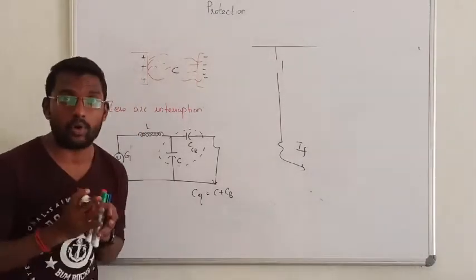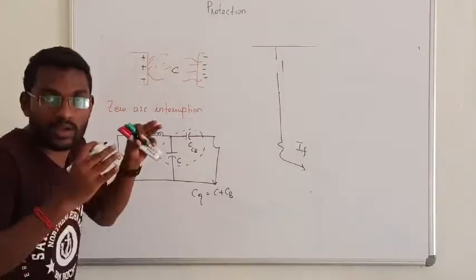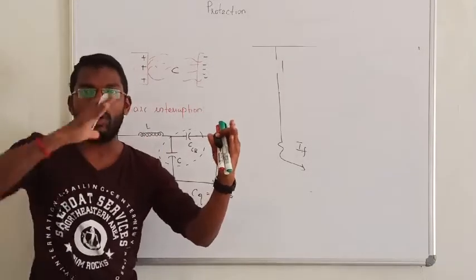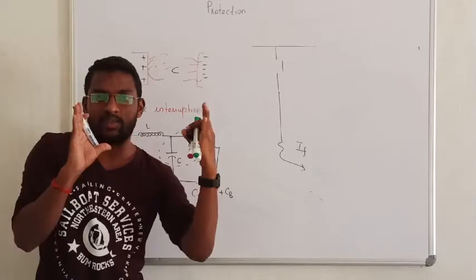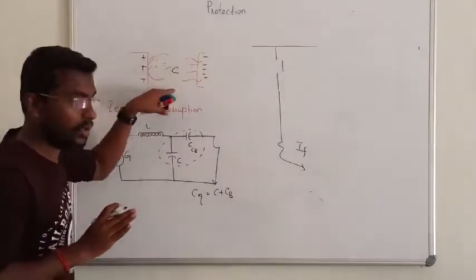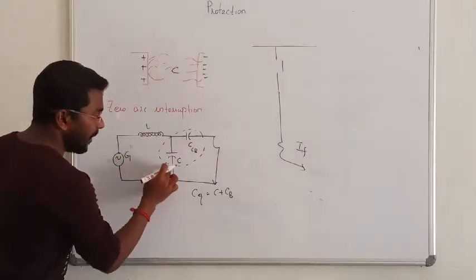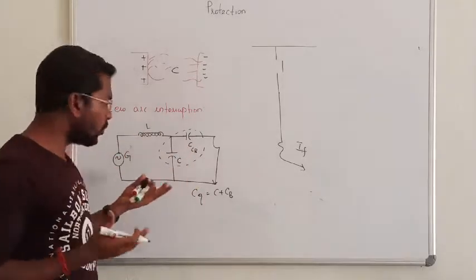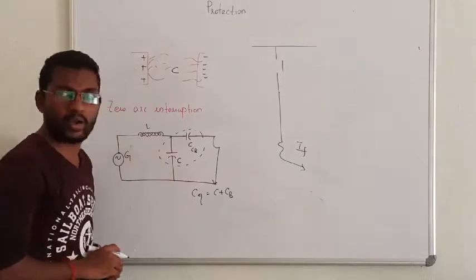Now we know the overall capacitance. If the circuit breaker is open and the arc interruption occurs, another capacitor exists along with the inductance of the transmission line. So an LC circuit is formed.